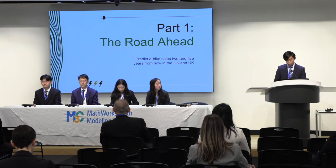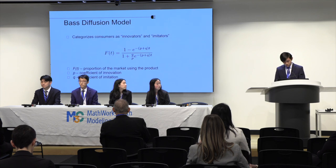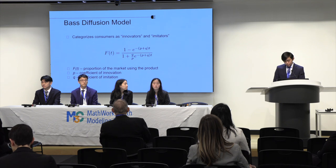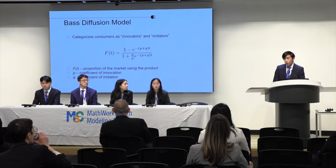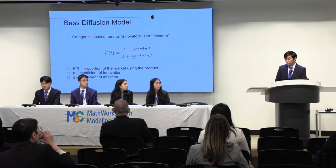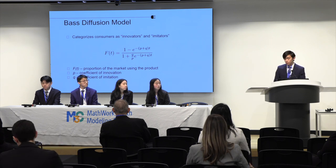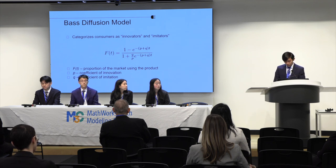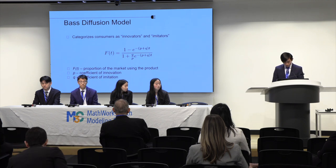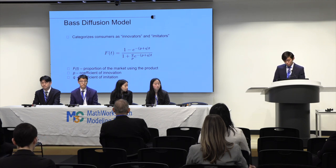Beginning with part one, we strove to predict e-bike sales two and five years from now in the US and the UK. To do this, we used the Bass Diffusion Model, a differential equation that describes how new technology diffuses throughout a population. When solved, the equation yields the formula shown here. F of T is the proportion of the market using the product as a function of time. P is the coefficient of innovation, which can be interpreted as a measure of external influence or advertising. And Q is the coefficient of imitation, which can be interpreted as a measure of internal influence or word of mouth.